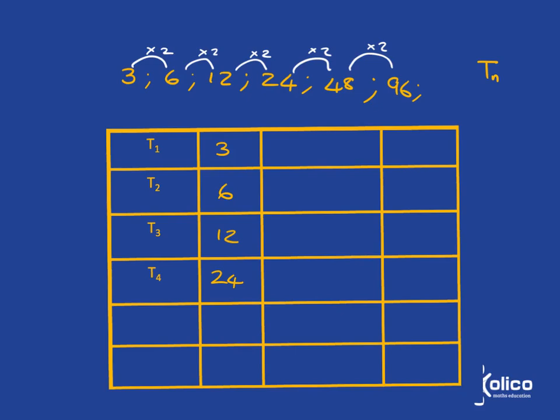I'm going to use a table just to help me sort this all out. So I've written my pattern of, well, at least the first four terms of it into this table. And now I'm going to try and see what calculation did I do to get to the 6? What calculation did I do to get to the 12?